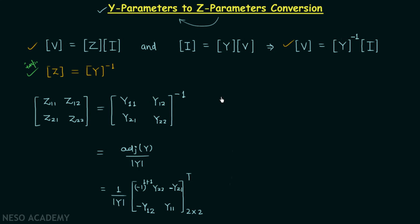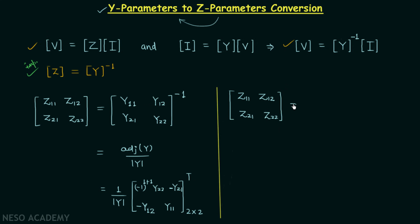Moving forward, we take the transpose of this matrix. On the left-hand side we have the matrix with elements z11, z12, z21, and z22. On the right-hand side, the first element is y22, then −y12 — this element comes to this position because we are taking the transpose — followed by −y21, and finally y11.